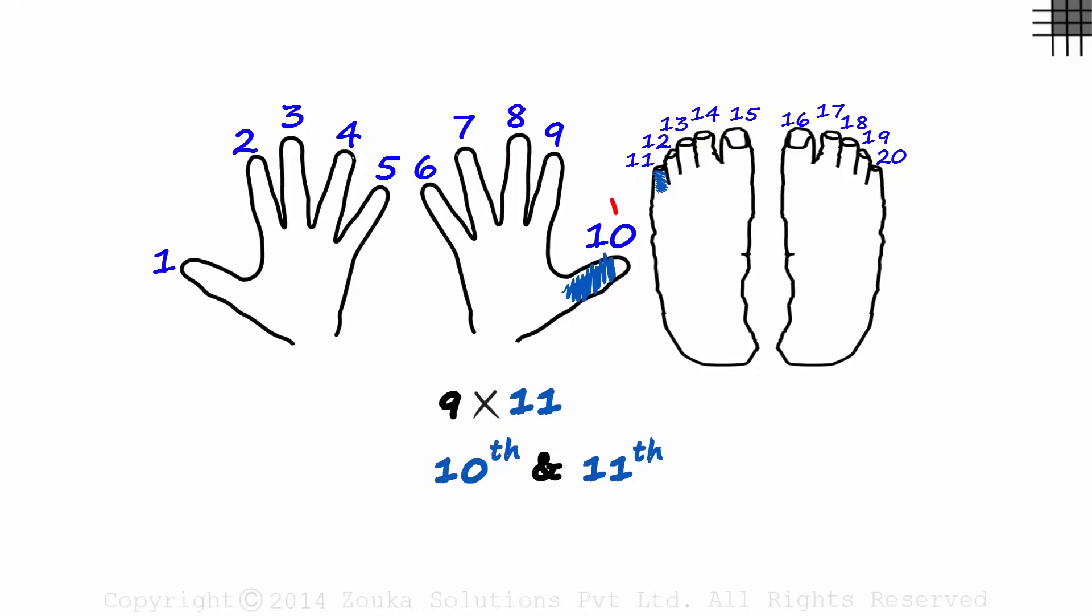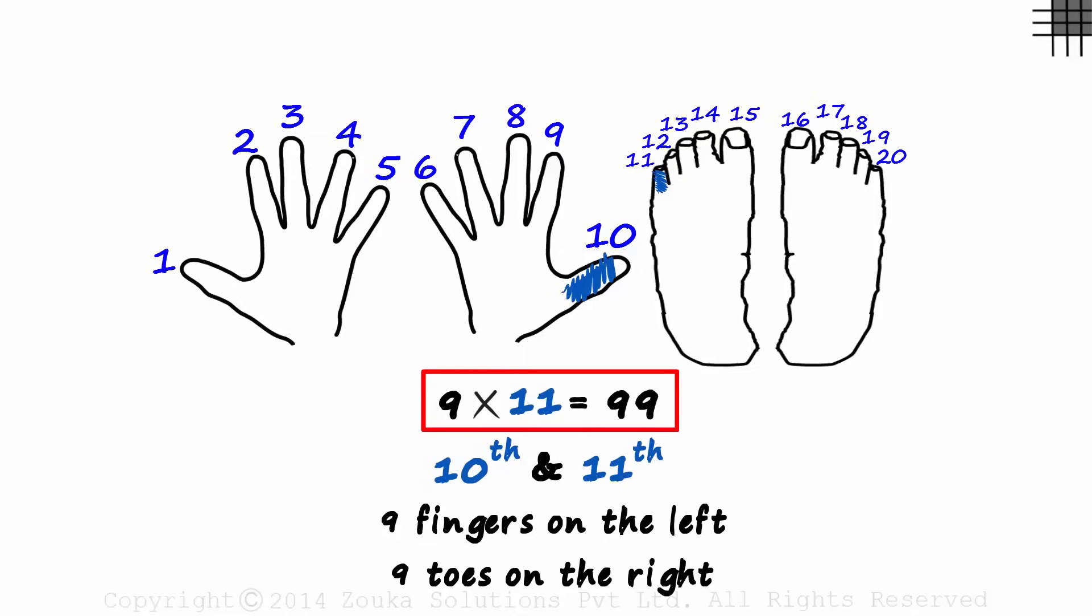And now we count the positions on the left and the positions on the right. We can see that there are 9 fingers on the left, so we write a 9 first. And then there are 9 toes on the right, we write a 9 again. That's our number. 9 times 11 is 99.